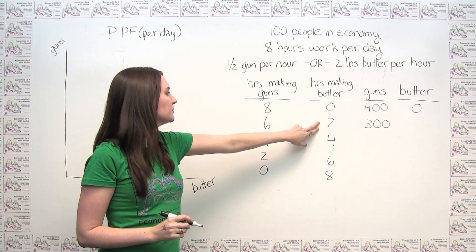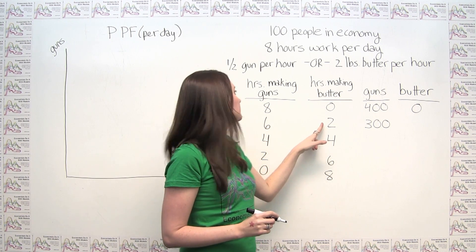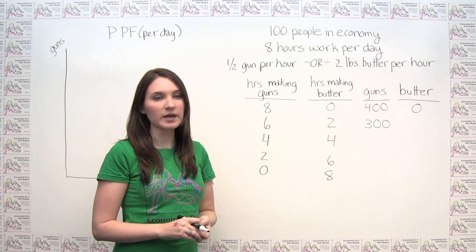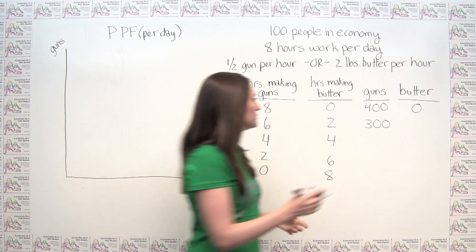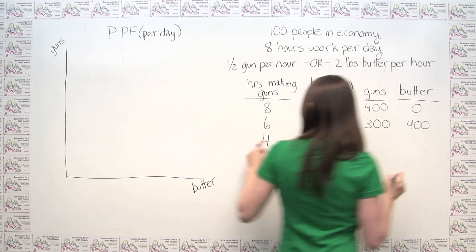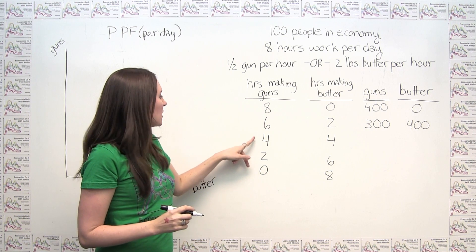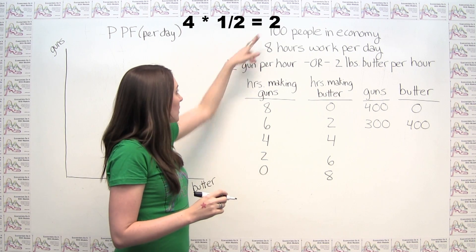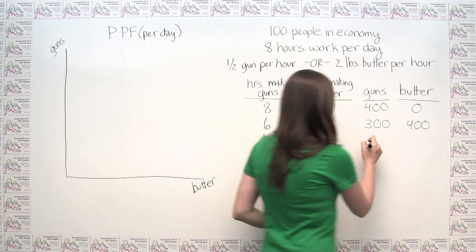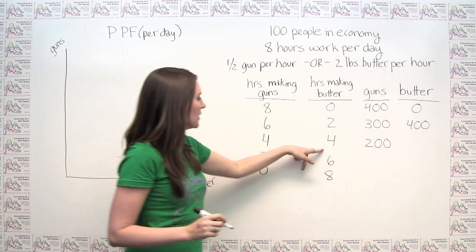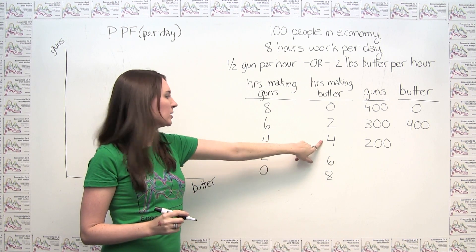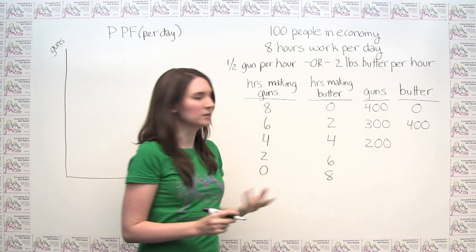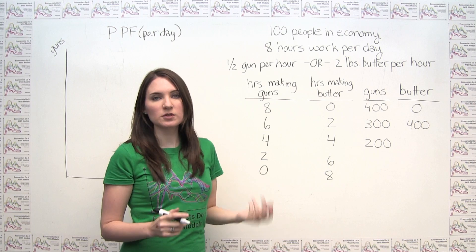Now we actually have some butter production. If each person is spending two hours making butter at two pounds of butter per hour, then each person is making four pounds of butter per day. In the four-hours-guns case, at half a gun per hour, each person makes two guns per day — a hundred people gives us two hundred guns. Each person spending four hours making butter at two pounds per hour makes eight pounds of butter, so a hundred people gives us eight hundred pounds of butter in total.